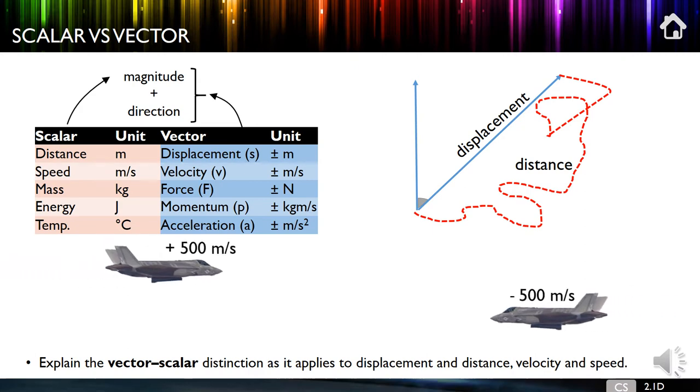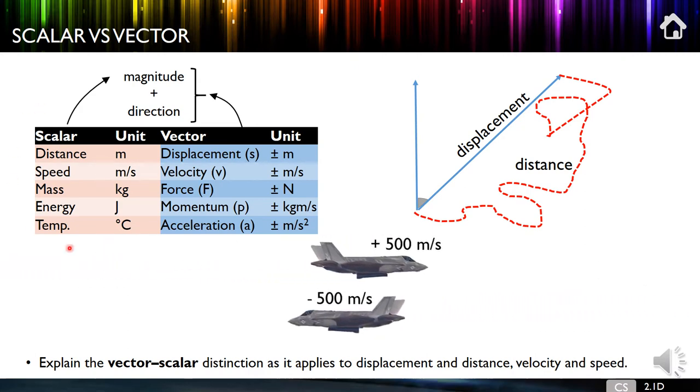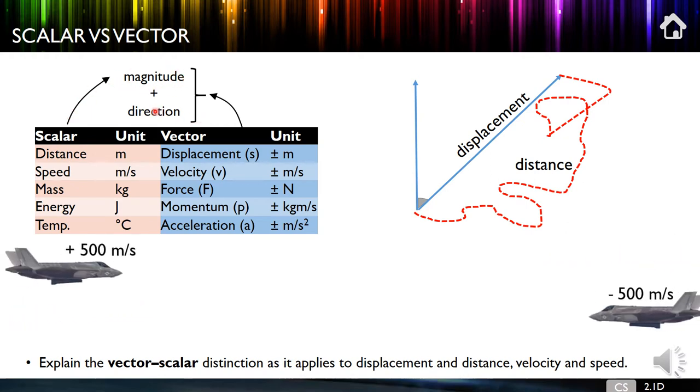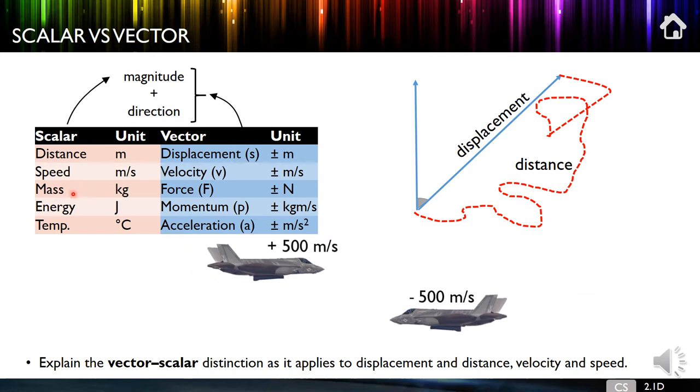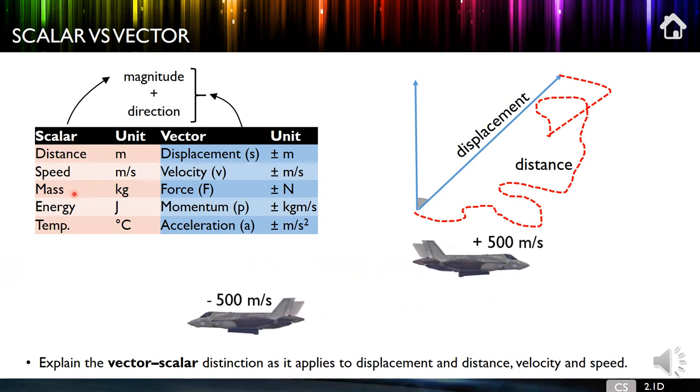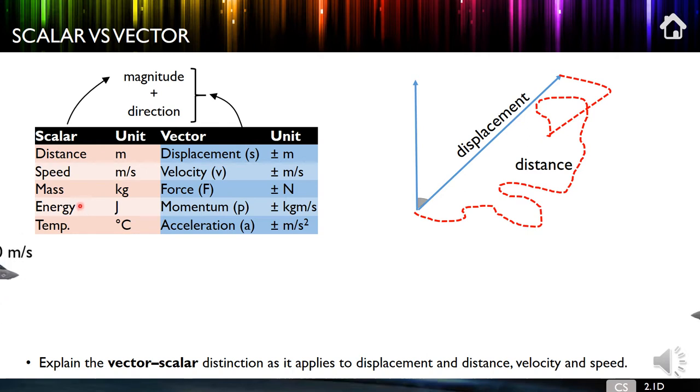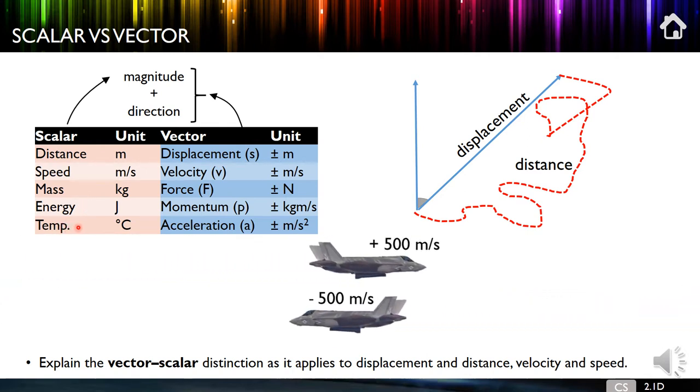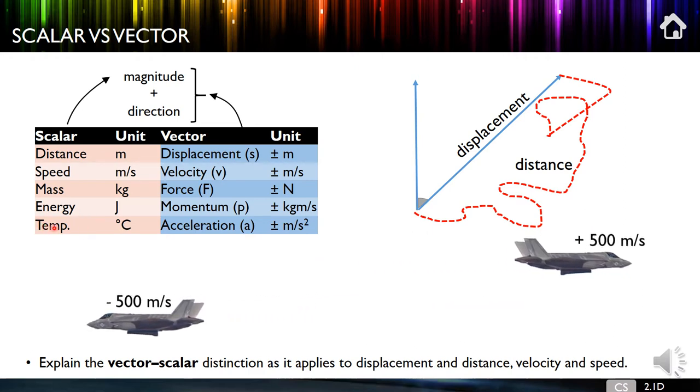So scalar versus vector. So here on the pink side of the graph, we've got some scalar quantities. Now what does that mean? It means they only have magnitude. Direction doesn't make any sense. So for mass, if you have four kilograms, it doesn't make sense to say up, down, left, right. Energy similarly doesn't make any sense. If it's 12 degrees in a room, you're not tempted to say is that left or right. It just doesn't make any sense.